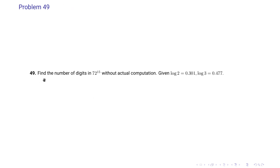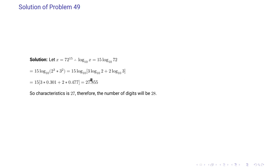Problem 49 says: find the number of digits in 72 to the power 15 without actual computation, given log 2 and log 3. We let x equal 72^15, split 72 into factors of 2 and 3, compute the logarithm, and find the characteristic is 27. So the number of digits is 28.